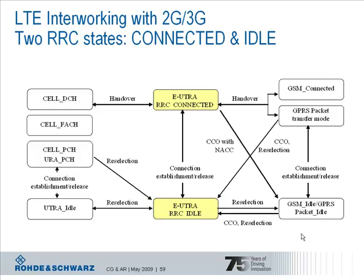For example, from the EUTRA RRC connected state to the UMTS cell DCH state, or from the EUTRA RRC connected state to either the GSM connected or the GPRS packet transfer mode state. In between LTE and GSM-GPRS you can see that cell change order mechanisms abbreviated CCO are defined, also including network assisted cell change NACC.